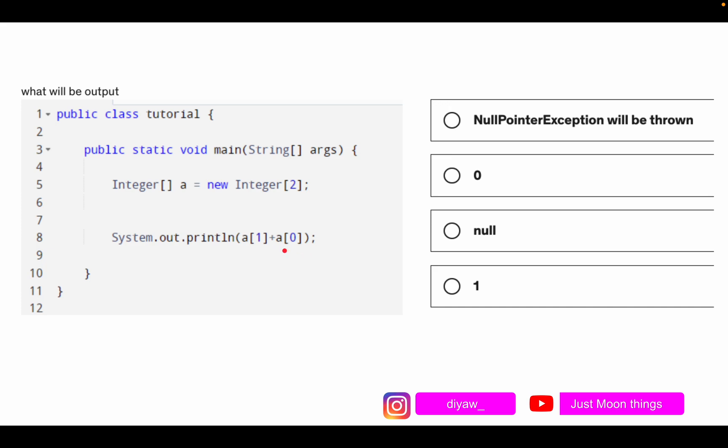So what will this do, what will be the output? Will it be a null pointer exception will be thrown, will it be zero, null, or one? In this case, what will happen is if you notice at line number 5, we created an array but we did not assign any value to the array elements of wrapper class.